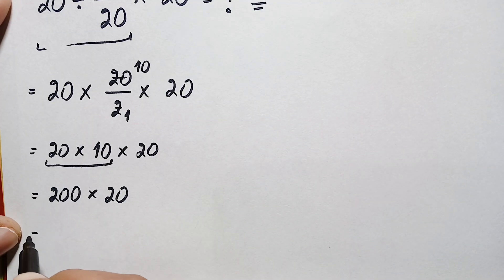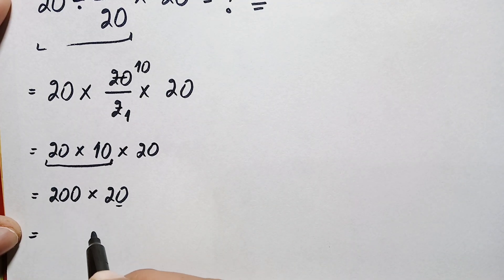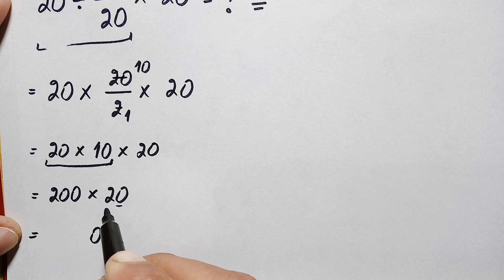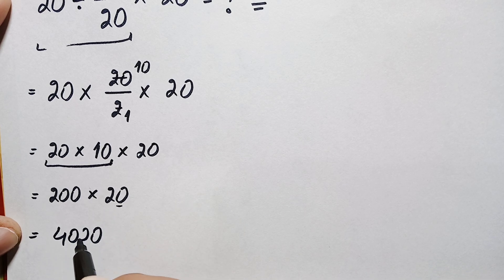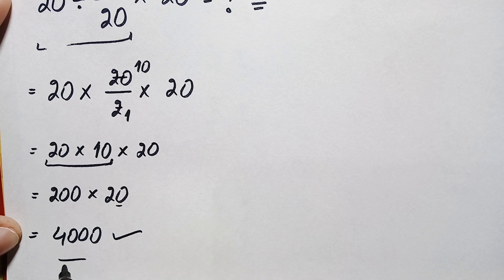Let's try these multiplications here. 200 times 0 is 0, and 200 times 2 is, it is simply 400. So this gives him 4000 and this is our final correct answer.